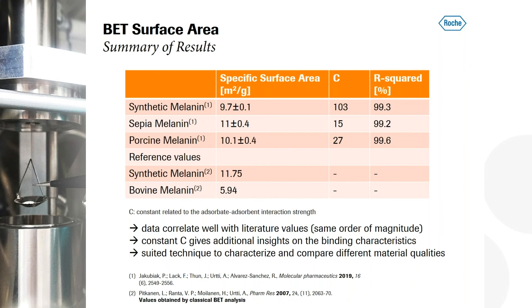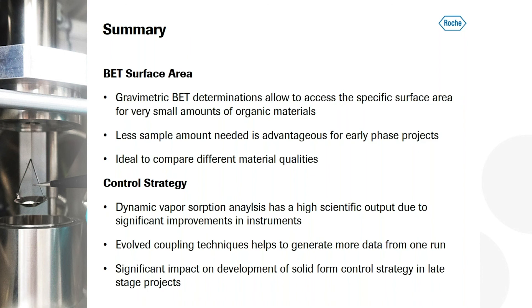With that, I want to conclude. I think I showed you that with this gravimetric BET determinations using the DVS, it allows you to detect the specific surface area for very small amounts of organic materials. I also want to highlight that you analyze your sample in the ambient conditions, which means that you don't have a clean surface by vacuum or something like that. So it's really your sample. You just put in your system. You need less sample amount, which is very advantageous for early phase projects where you don't have so much material. And it's really ideal to compare different material qualities if you run a series and can compare your DVS data with each other.